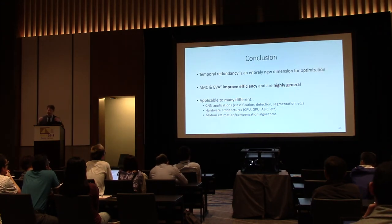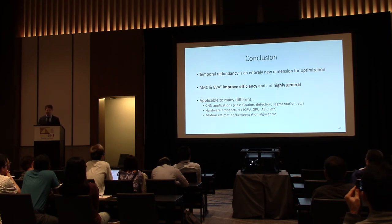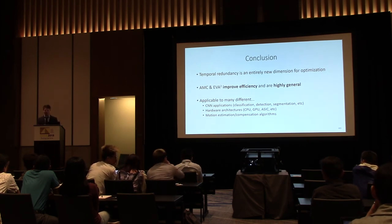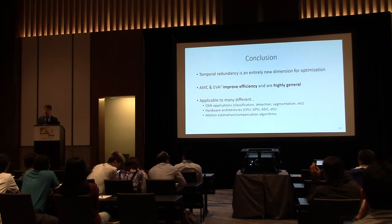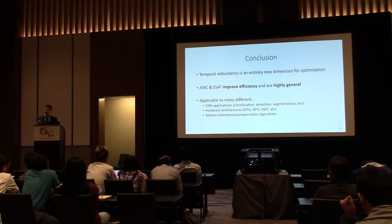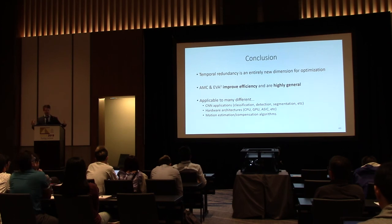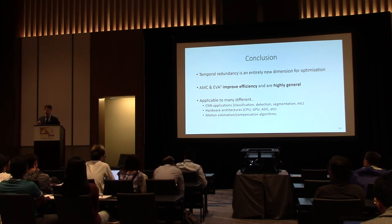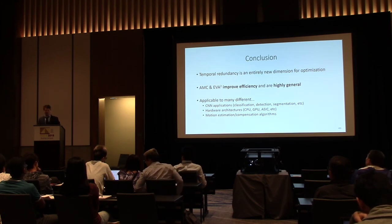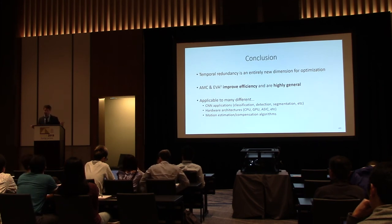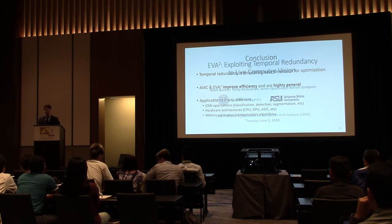In conclusion, temporal redundancy is an entirely new dimension of optimization. We've been thinking about sparsity — that's excellent and should continue — but we should also begin thinking about temporal redundancy. AMC and EVA Squared significantly improve efficiency and are highly general: applicable to many CNN applications including segmentation and scene labeling, to many different hardware architectures since EVA Squared is a small modular widget, and to different motion estimation algorithms — if you prefer a different algorithm, it can be swapped in and will still work.